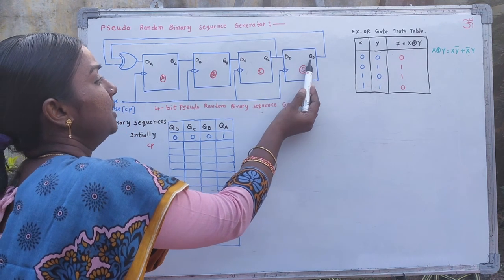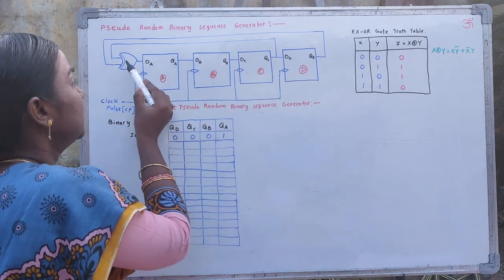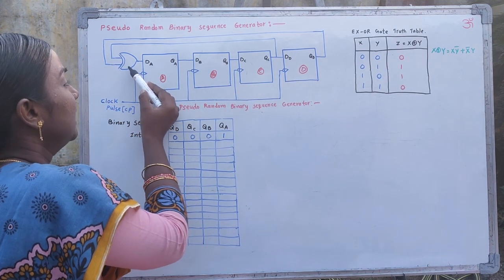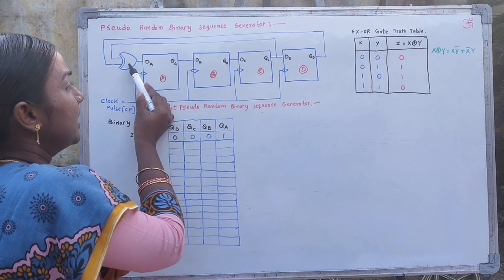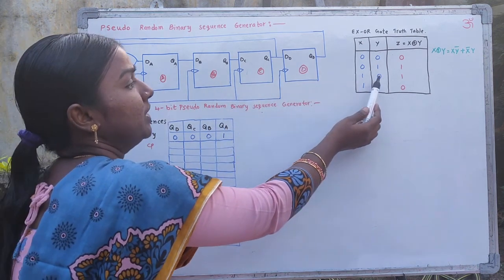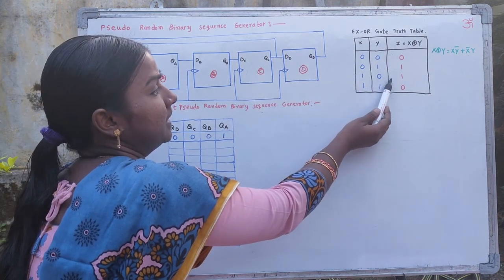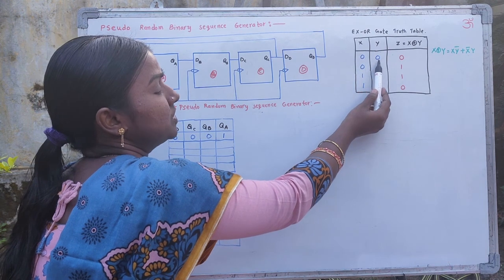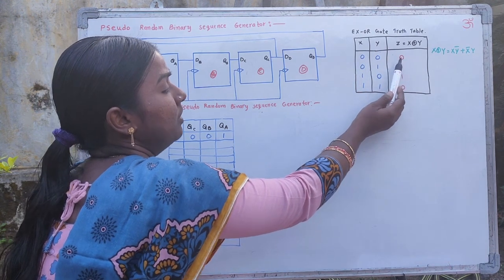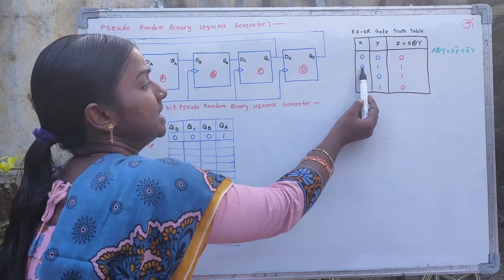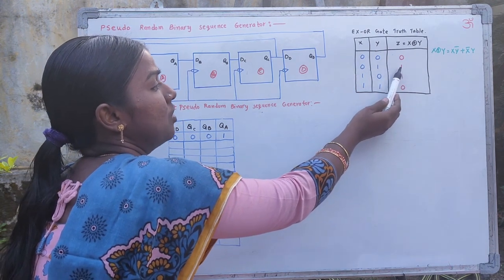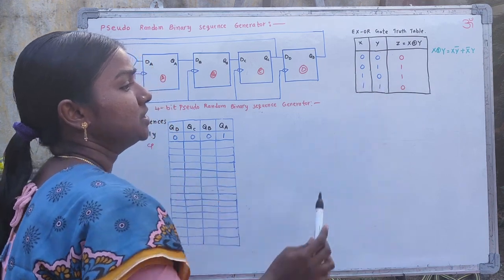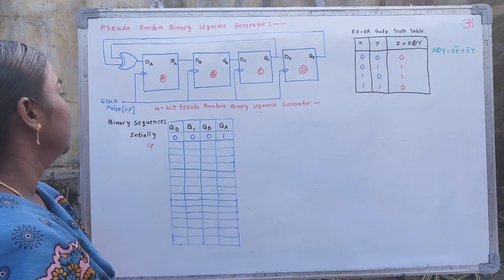QC and QD are connected to the exclusive OR gate. The truth table for this exclusive OR gate is: when the bits are 0, 0, the output is 0; when the bits are 0, 1, the output is 1, and so on.